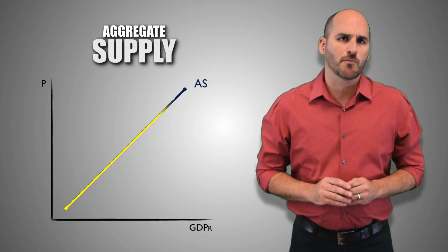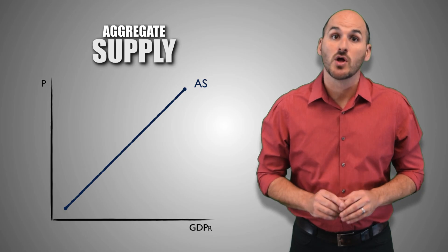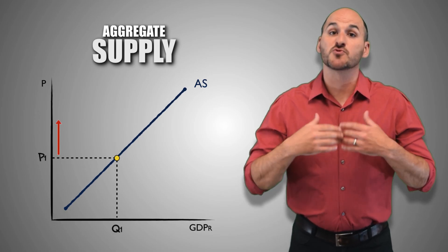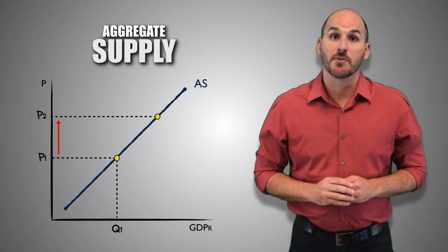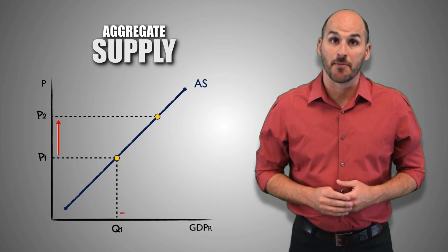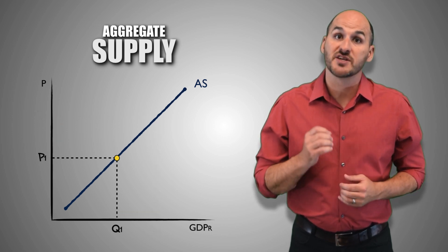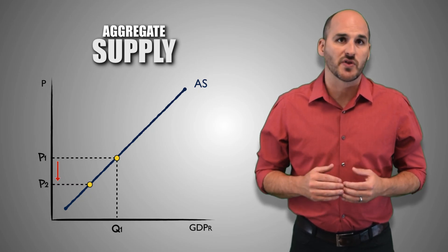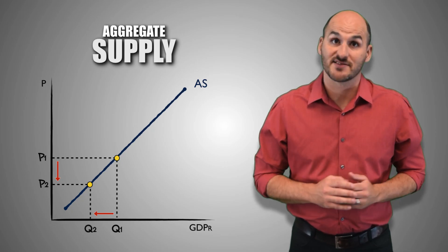Notice that it is an upward sloping curve, implying that the relationship between aggregate price level and aggregate real GDP output supplied is positive. This means that as prices rise due to inflation in the aggregate economy, firms across the economy are more willing or more able to produce the same quantity of real GDP output, and therefore supply more. As prices fall due to deflation in the aggregate economy, firms across the economy are less willing and less able to produce the same quantity of real GDP output, and therefore supply less.